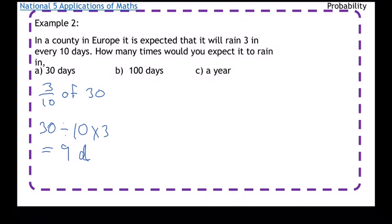For this b we're going to find three tenths of 100. So 100 divided by 10 is 10, times by 3 is 30. So it's 30 days.